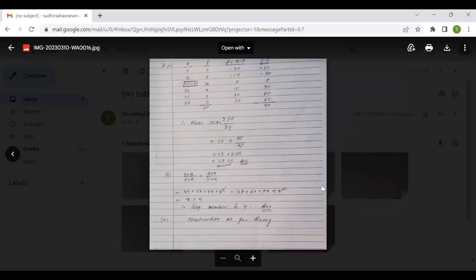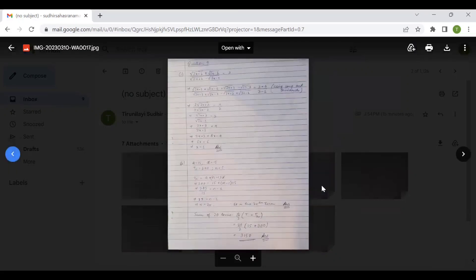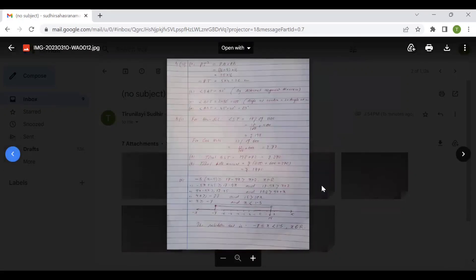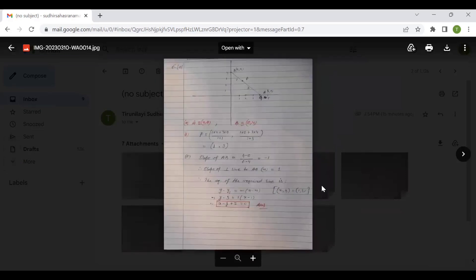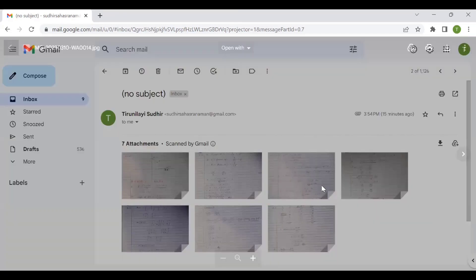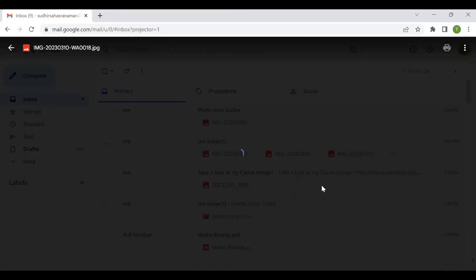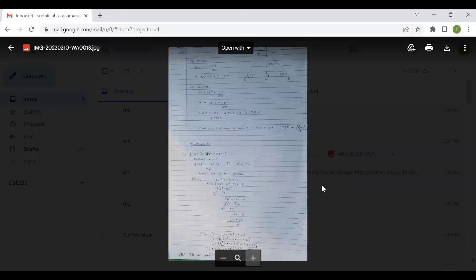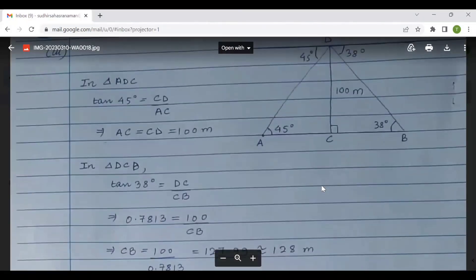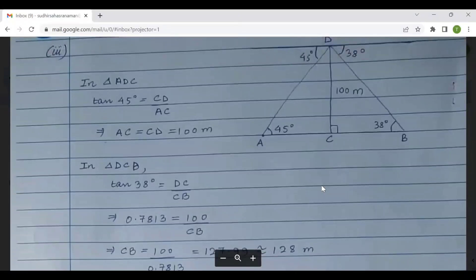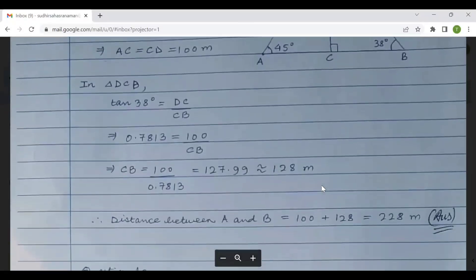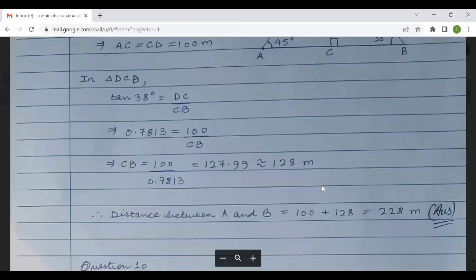I am just checking if I have left out anything, any page. No, I have not. And then there is the final one, which is the final page. This is the final page, ninth part three. Just see the way the solution has been worked out. The steps, 228 meters being the final answer. That is question number ninth.